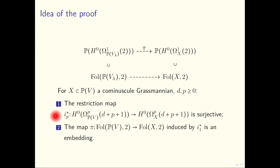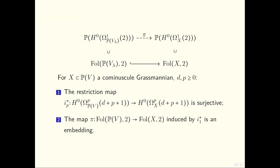We can prove also that this map given by the restriction to the space of foliations is actually an embedding. This is for general cominuscule Grassmannians, not only those in the statement of the theorem.